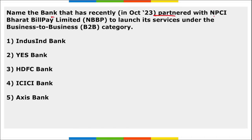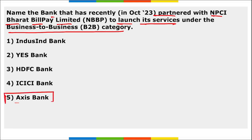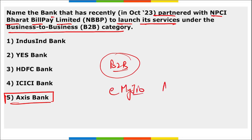Next, which bank recently partnered with NPCI Bharat BillPay Limited to launch its services under the business-to-business category? It is Axis Bank — partnered with NPCI Bharat BillPay Limited under the B2B category. NPCI's B2B category payment went live for the first time on the MyJio application, with Axis Bank as their biller operating unit. MyJio became the first app to go live with the B2B category payment.